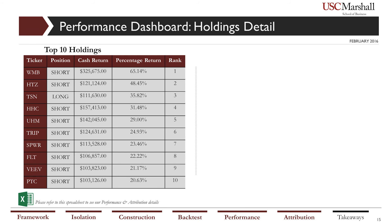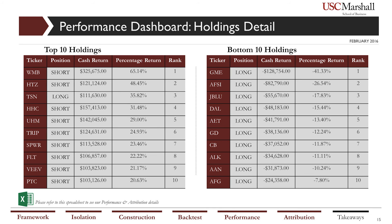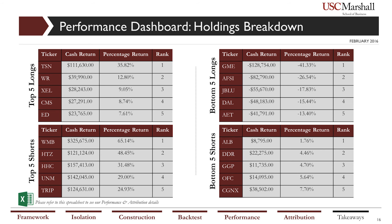Diving more deeply into our portfolio, our top holdings were dominated by shorts while our bottom holdings were typically long positions, which we attribute to the recent struggles in the market. The huge positive return of our top positions more than made up for the negative returns in struggling positions. Not a single one of our shorts lost money, with our worst-performing short position still generating 1.76% positive return. Interestingly, our fifth worst short actually outperformed our fifth best long. We attribute the poor returns in our long portfolio to the broader market struggling as well as strong short opportunities identified by our methodology.